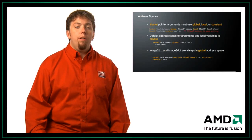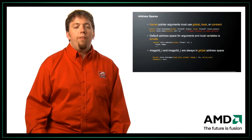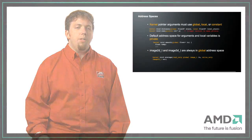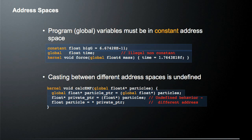Note that Image2D and Image3D are always in global address space. You also need to specify whether image types are read-only or write-only — you can't do both at the same time. Program global variables must be in the constant address space; you cannot have a global variable that is not constant. Also, casting between different address spaces is undefined — you cannot cast a global memory pointer directly to private memory because they may be physically different memories. To move data between spaces, you must explicitly copy it.